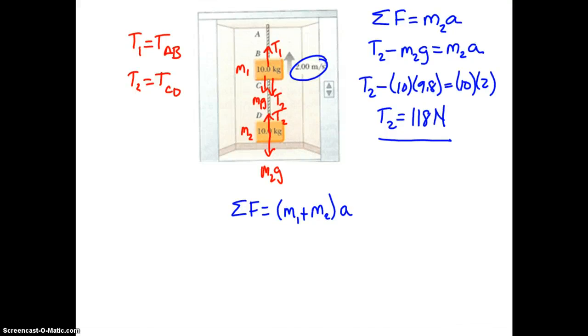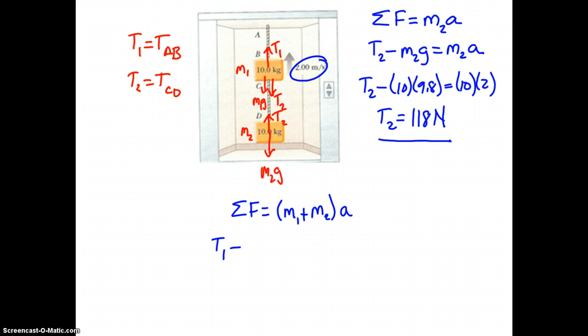Now we're going to go ahead and do the summation. This would be T1 up, the only force in the positive direction. Minus. And the only force we have in the negative direction is the weight m1g and m2g. Or we would say m1 plus m2 times g equals m1 plus m2 times a.